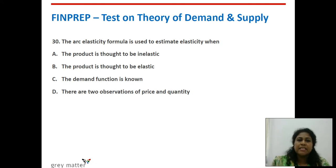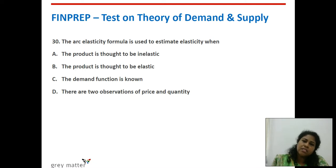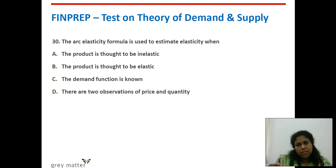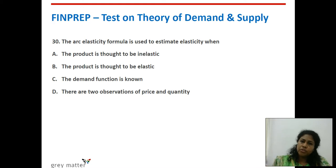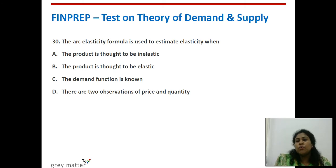Thirtieth question: the arc elasticity formula is used to estimate elasticity when what? Arc elasticity is not about a particular point; it measures a movement from one point to another along the arc. When you move from point A to point B, you have two sets of coordinates: x1, y1 for point A and x2, y2 for point B. You need two prices and two quantities — only then is arc elasticity possible. The right answer is: there are two observations of price and quantity.